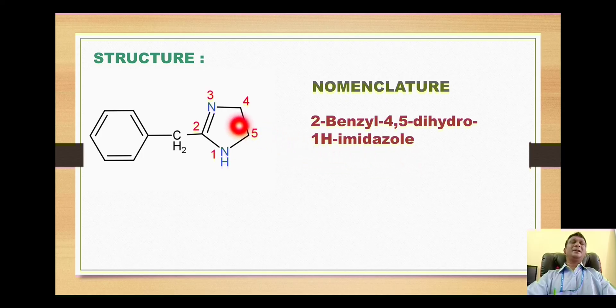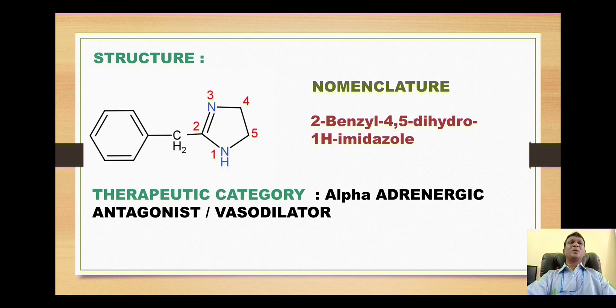Now if we say imidazole, that means there should be a double bond over position number four and five, but it is not there. That means the position four and five is saturated, so it is called 4,5-dihydro. This is the nascent hydrogen which is present on position number one, so it is called 1H-imidazole. Next, move on to the therapeutic category.